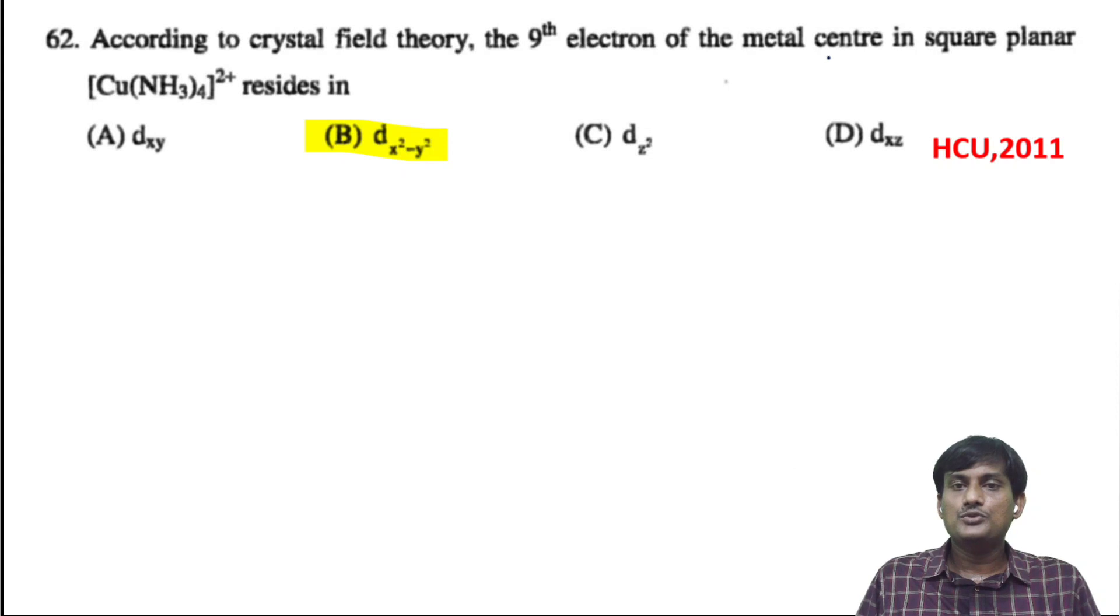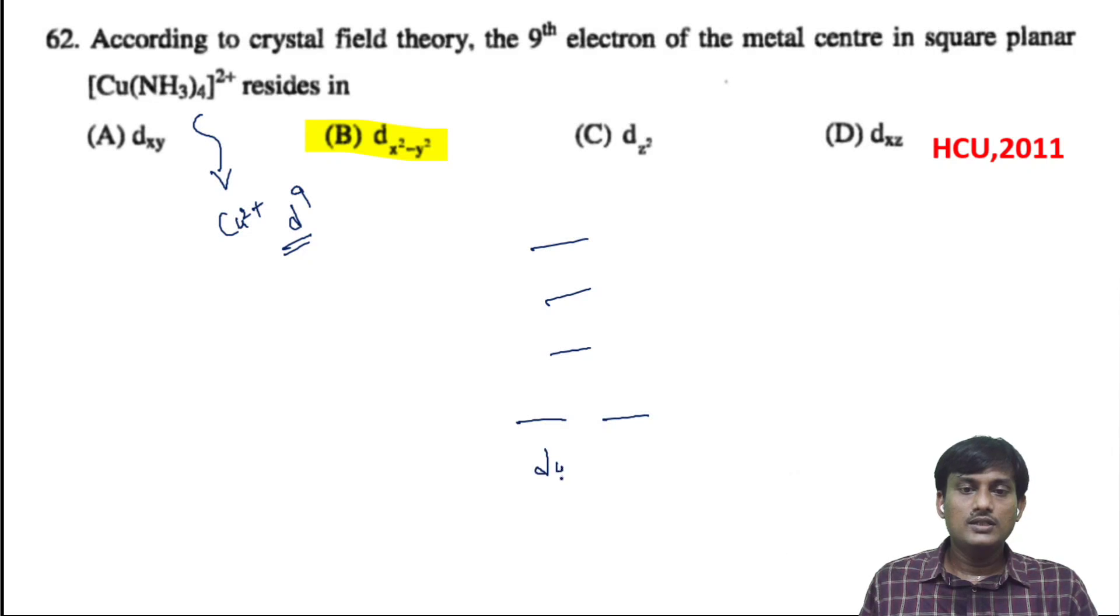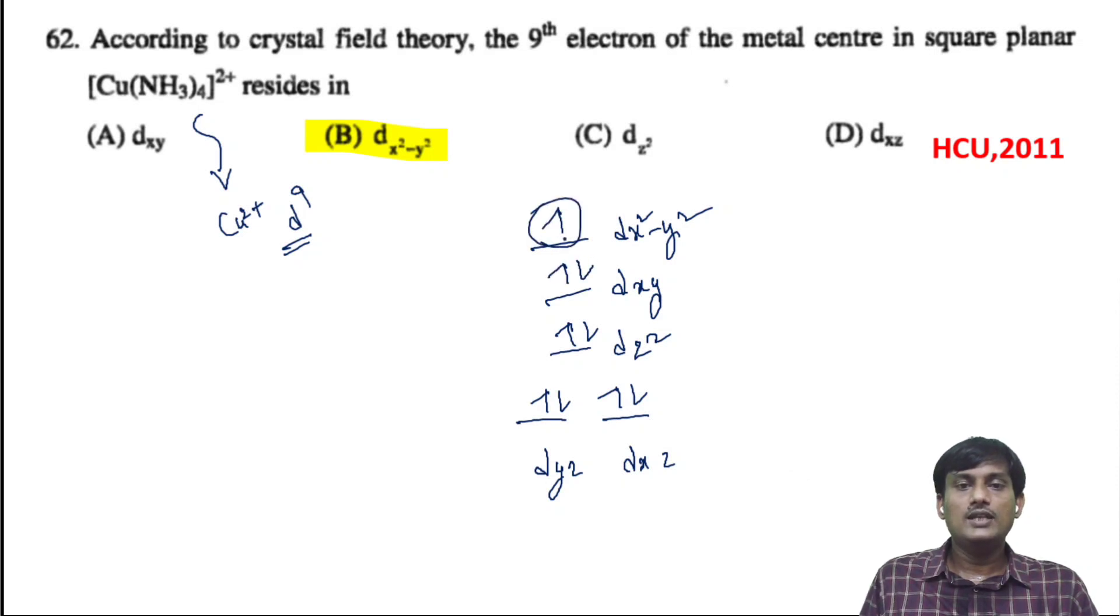According to crystal field theory, the ninth electron of the metal center in square planar [Cu(NH3)4]^2+ resides in which orbital? Cu^2+ has d^9 electronic configuration. In square planar splitting, the order is: dyz and dxz (lowest), then dz^2, then dxy, and dx^2-y^2 (highest). If you fill 9 electrons: 2, 4, 6, 8, and the ninth electron enters dx^2-y^2 orbital.